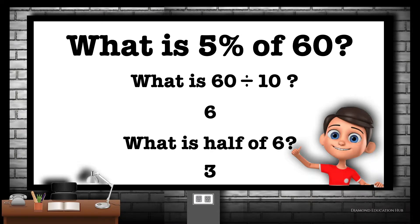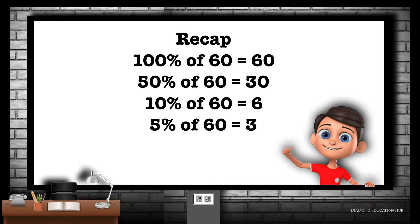What is 5% of 60? You already know that 10% of 60 is 6. So, to work out 5% of 60, you need to half 6, which is 3. Let's recap: 100% of 60 is 60, 50% of 60 is 30, 10% of 60 is 6, and 5% of 60 is 3.